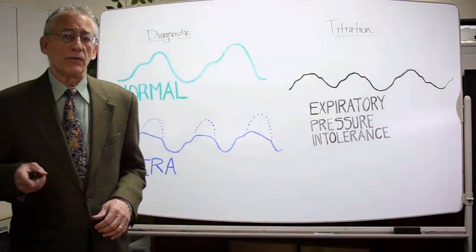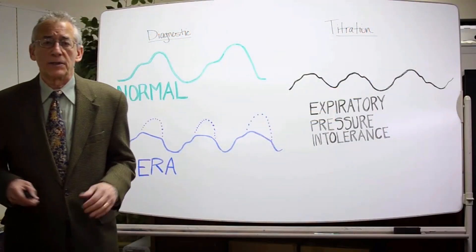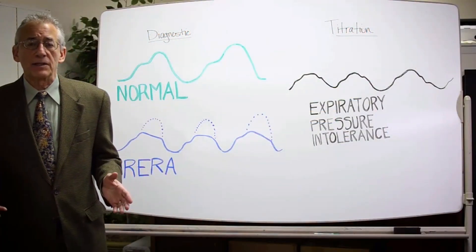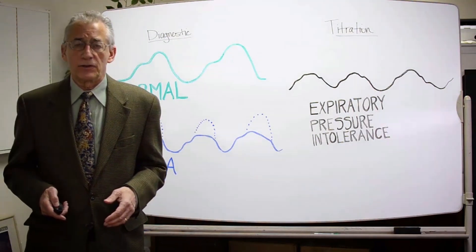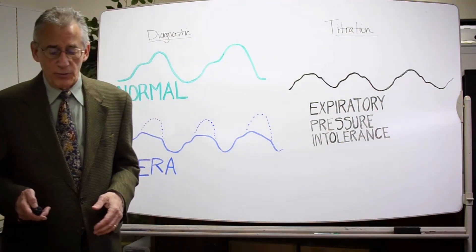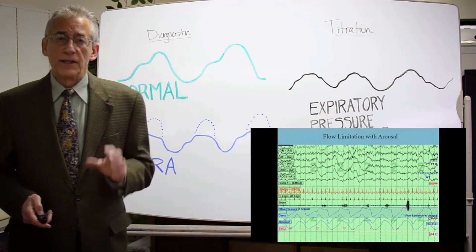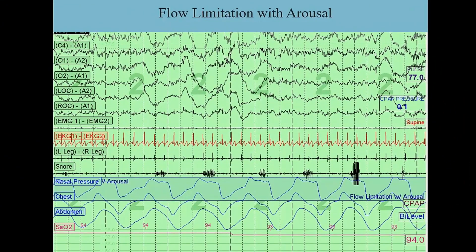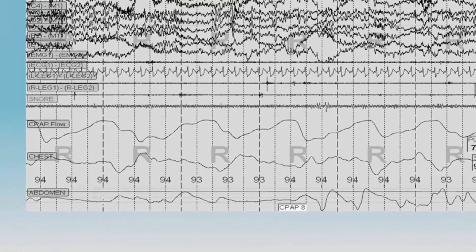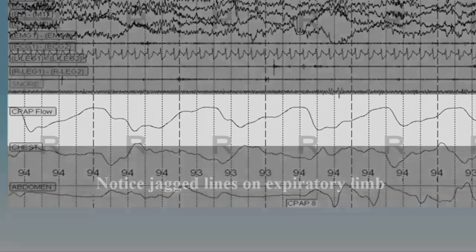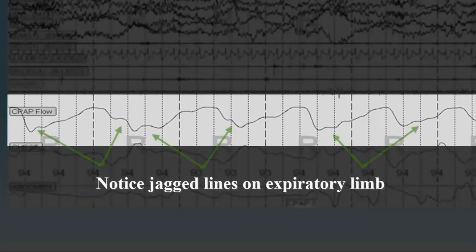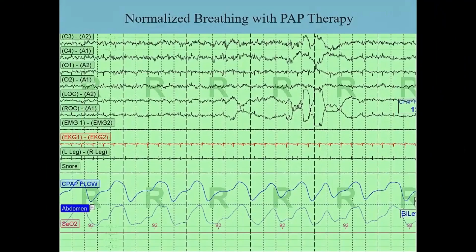Regardless of whether the patient develops central apneas, it is very common for these individuals to develop expiratory pressure intolerance. This is the cardinal process: flow limitations lead to expiratory pressure intolerance when treatment is not going well with PAP therapy. Obviously, our goal is to normalize the airflow curve.